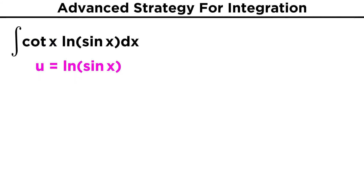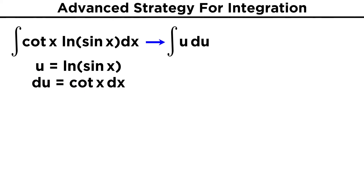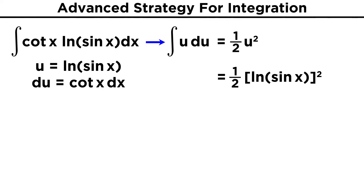We make ln(sin x) equal to u, and then we find that cotangent x dx is equal to du. That will give us u du. We integrate to get one half u squared, switch u back to what it was before, and then finish things off with plus c. Easier than you expected, I bet.